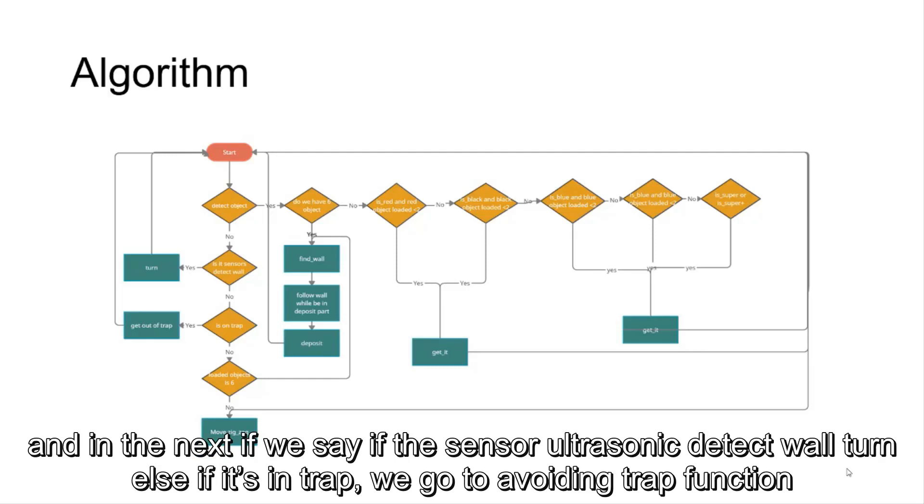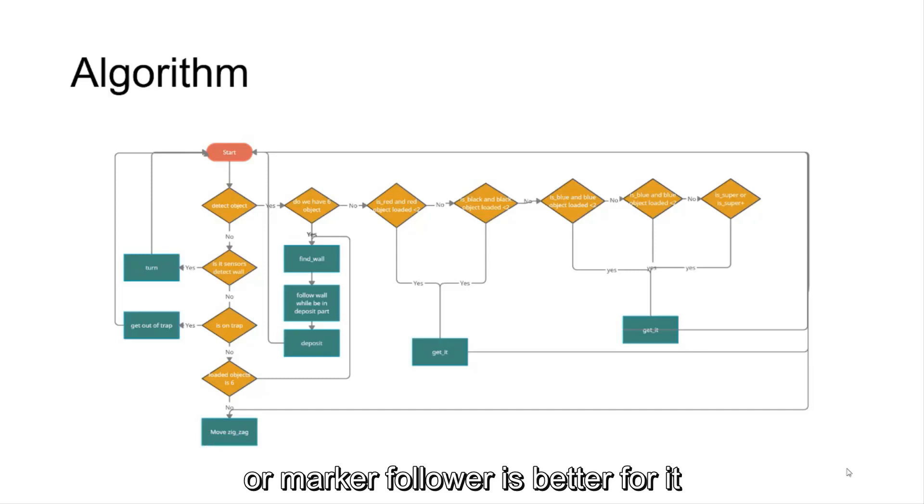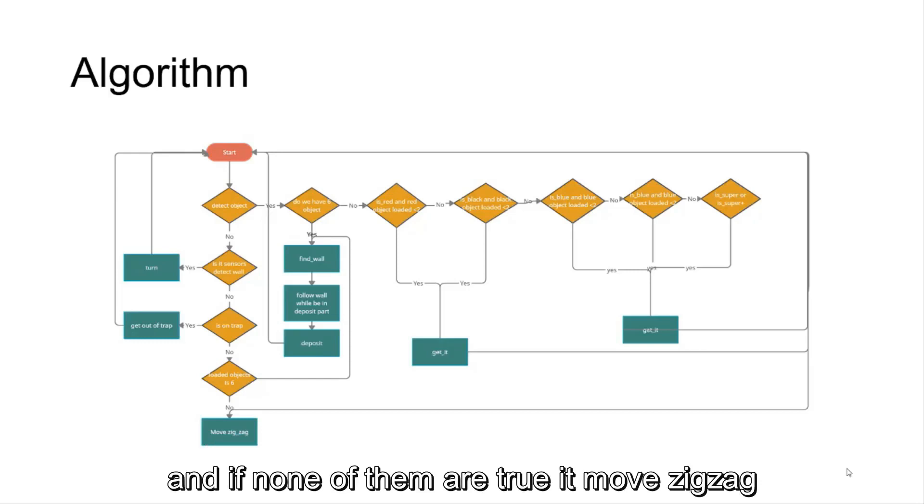we go to avoiding trap function. And if loaded object is 6, you know, we have two ideas for this. One of them is wall follower and another one is line follower or marker follower is better for it. And if none of them are true, it moves forward.